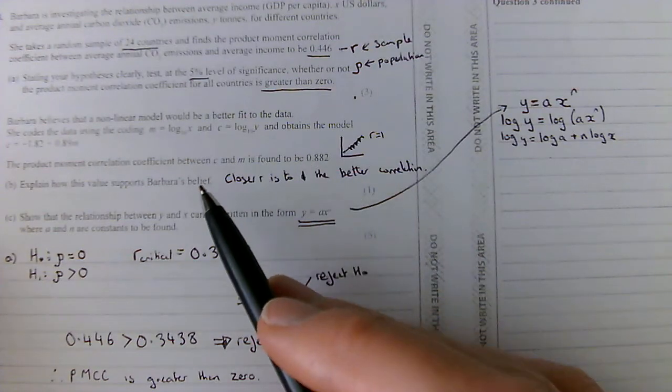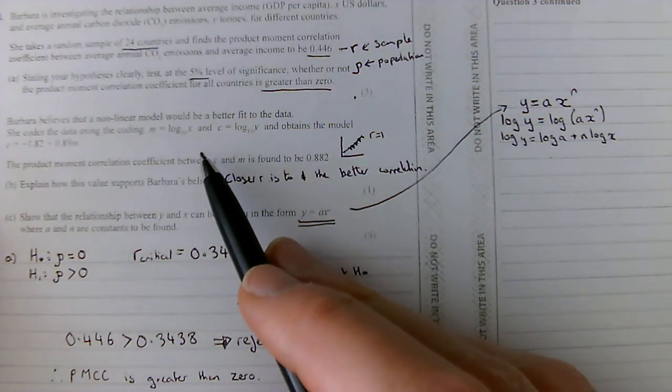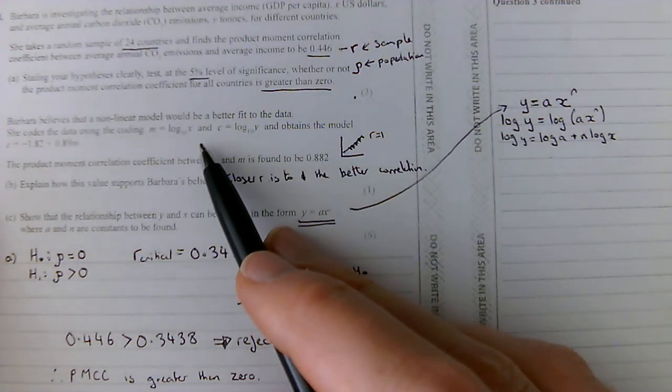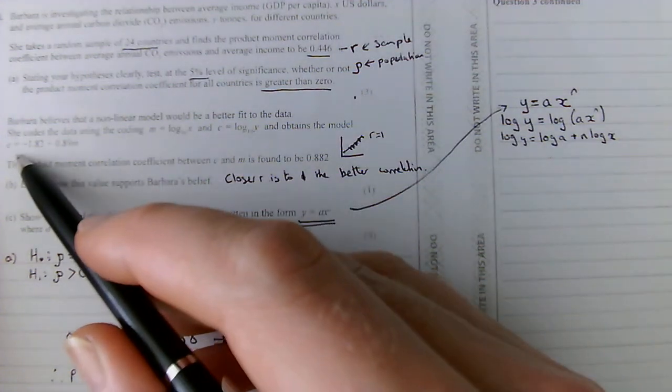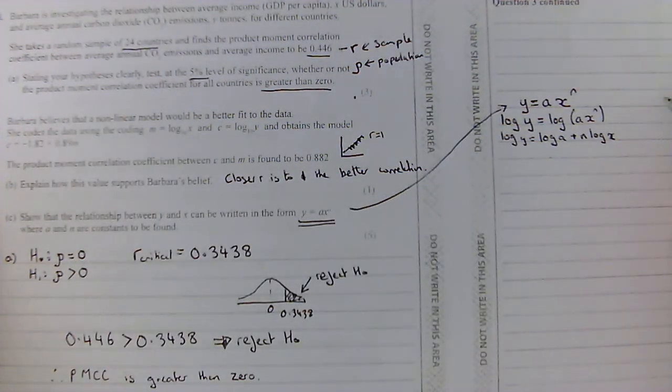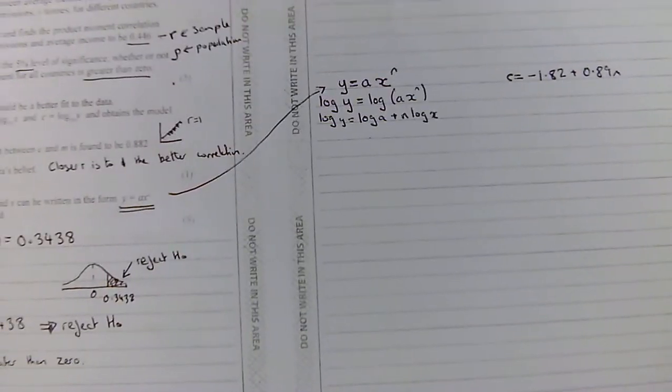Well, let's now compare that with what we've got here. So, here I'm told that C equals minus 1.82 plus 0.89m. I've just written that over here. C equals minus 1.82 plus 0.89m.